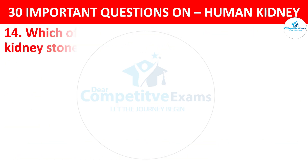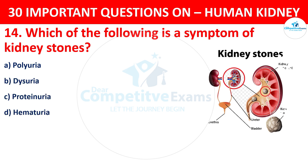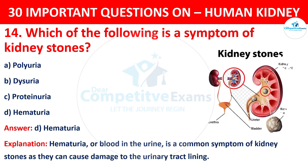Question 14. Which of the following is a symptom of kidney stones? The options are: Polyuria, Dysuria, Proteinuria, or Hematuria. The correct answer is D, i.e. Hematuria. Hematuria, or blood in the urine, is a common symptom of kidney stones, as they can cause damage to the urinary tract lining.